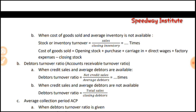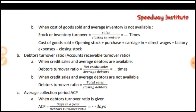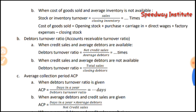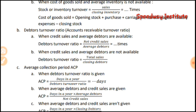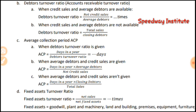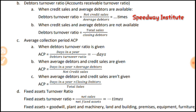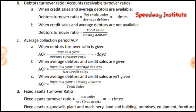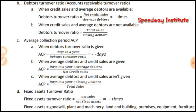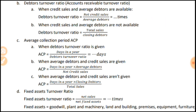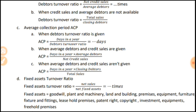When credit sales and average debtors are available, debtors' turnover ratio equals net credit sales divided by average debtors. When credit sales and average debtors are not available, use total sales divided by closing debtors. For average collection period (ACP): when debtors' turnover ratio is given, ACP equals days in a year divided by debtors' turnover ratio. When debtors and credit sales are given, ACP equals days in a year multiplied by average debtors divided by net credit sales. When average debtors and credit sales are not given, use days in a year multiplied by closing debtors divided by total sales.